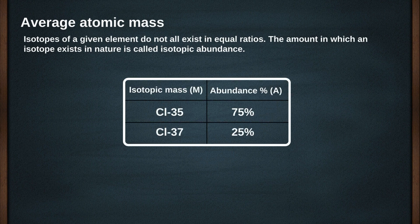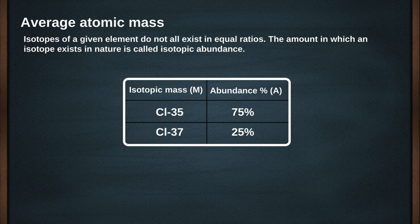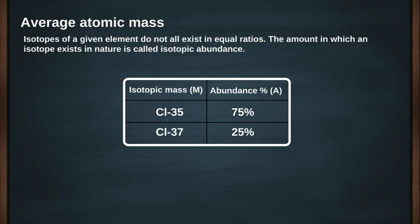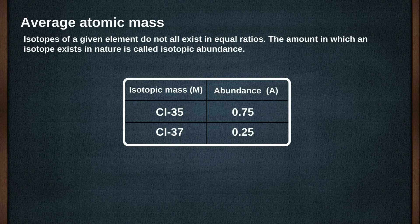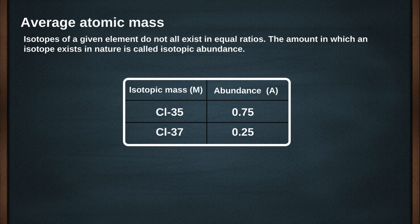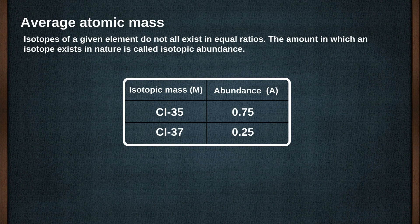Chlorine has two isotopes. Of all the chlorine atoms that exist, 75% have atomic mass of 35 atomic mass units. The remaining chlorine atoms, 25% of them, have atomic mass of 37 atomic mass units. Isotopic abundance can also be expressed as fractions or decimals. For example, the abundance of chlorine-35 is 0.75 and that of chlorine-37 is 0.25.